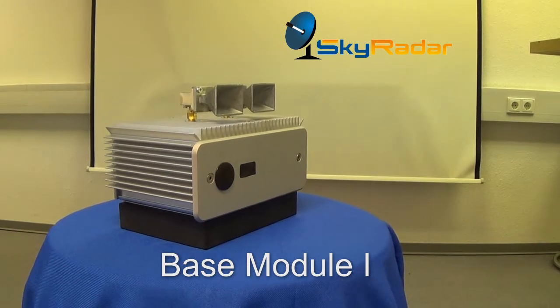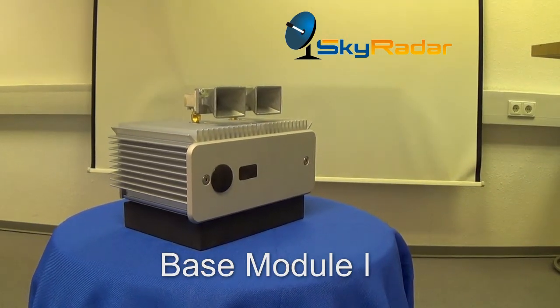The Base Module has two horn antennas and is ready to operate in constant wave and pulsed mode.